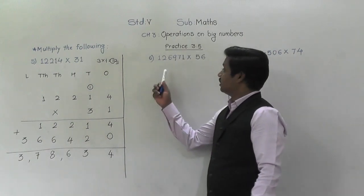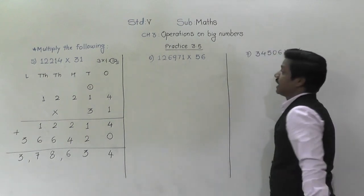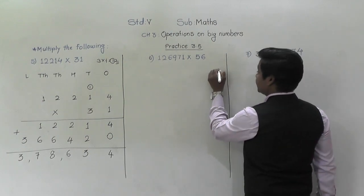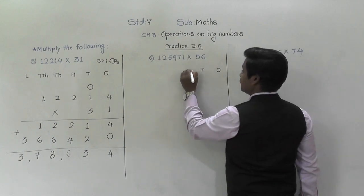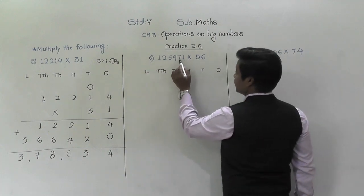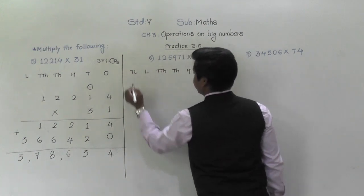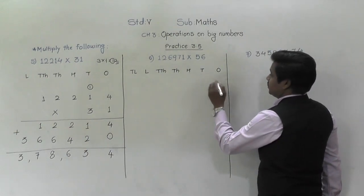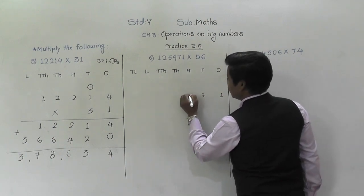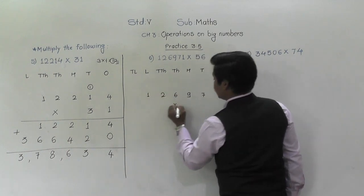Let's solve the next example — Example 6: one lakh twenty-six thousand nine hundred seventy-one into fifty-six, that is 1,26,971 into 56. We write the places: ones, tens, hundreds, thousands, ten thousands, lakh, ten lakh. We write one extra place since digits go up to lakh. So 1,26,971 into 56.